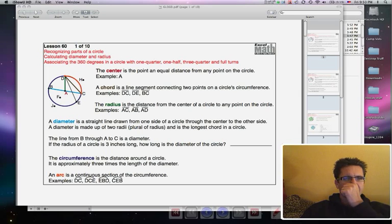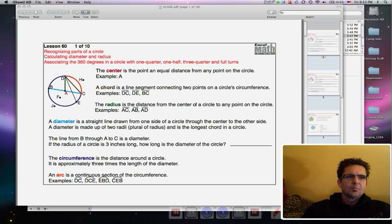The next term that you need to learn is a chord. A chord is a line segment connecting two points on a circle's circumference. So when we connect from point D over to point C, that is a chord. From B to C is also a chord, and from D to E is a chord.